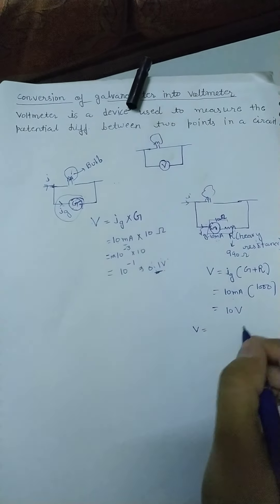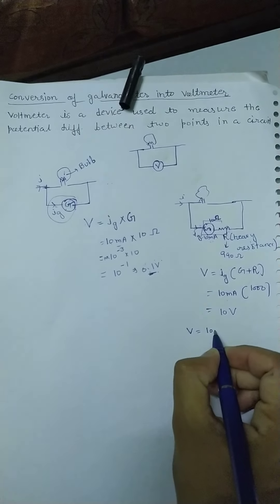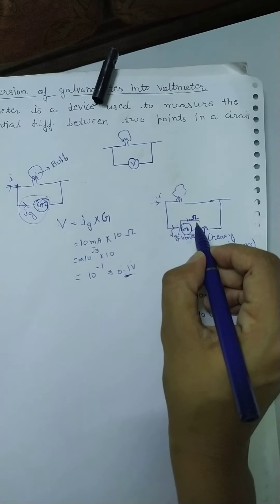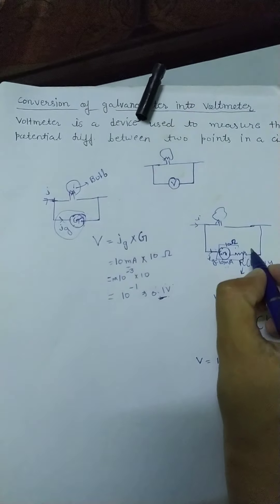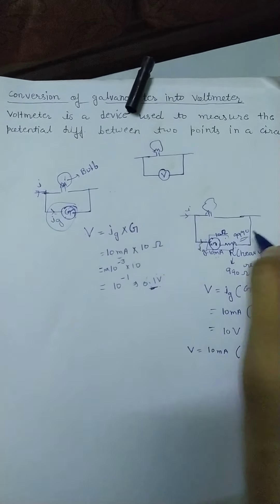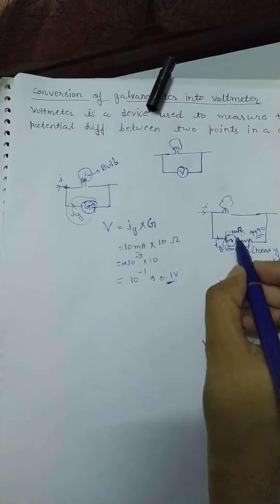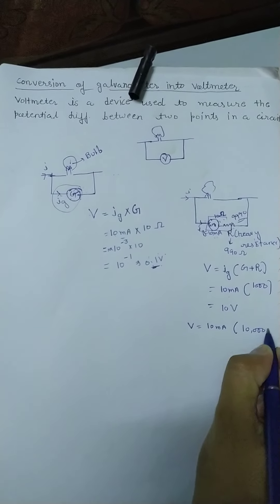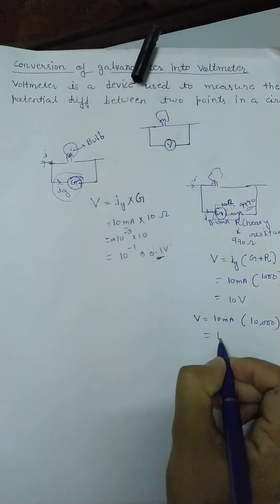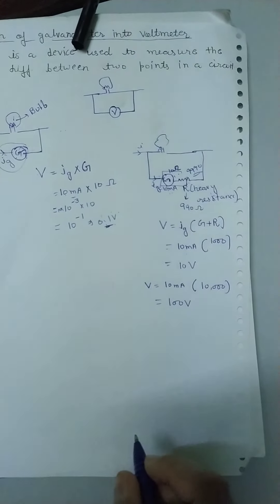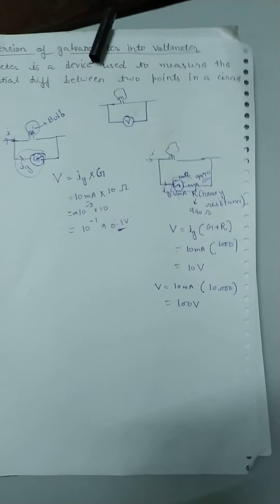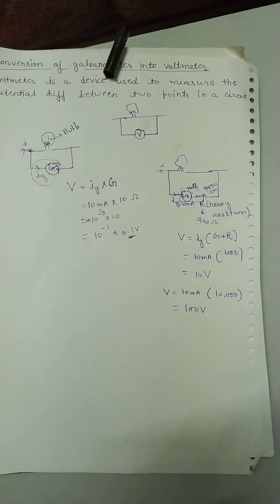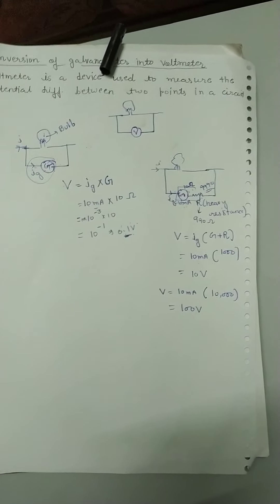Agar heavy resistance aur badha lein — IG = 10 milliampere, G = 10 ohm, aur heavy resistance = 9990 ohm — to G + R = 10,000 ohm. Aur V = 10 × 10⁻³ × 10,000 = 100 volt. To humne dekha, series mein heavy resistance connect karne par maximum potential difference increase ho gaya.